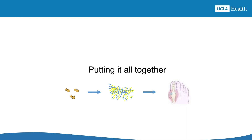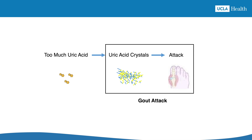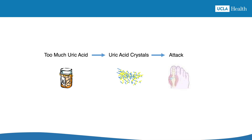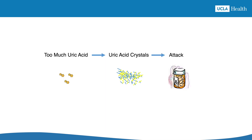Now that we know how to define gout the disease and gout attacks, let's put our knowledge together. High uric acid levels over time cause gout the disease by forming uric acid crystals throughout the body — this can take years and you normally don't feel it. When crystals in the joints are disturbed, the immune system activates and a gout attack happens — you can definitely feel the pain, swelling, and heat. Medications that lower uric acid can slowly dissolve all the crystals, and with no crystals, gout is cured. There are also medications that reduce pain and inflammation during an attack, but they don't lower uric acid or remove crystals, so they don't cure gout or prevent future attacks. You'll find out more about treatments in other chapters.